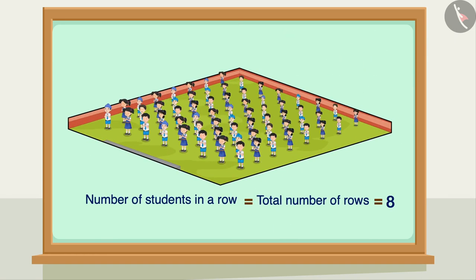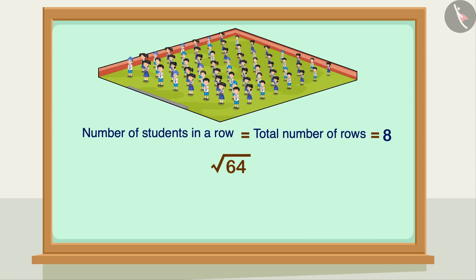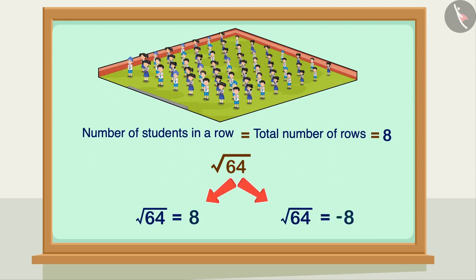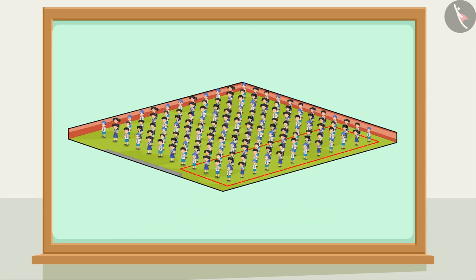So in the parade, the students will stand in 8 rows and each row will have 8 students. The square root of 64 can be both 8 and minus 8, but because we are talking about the number of students, only the positive square root will be taken.